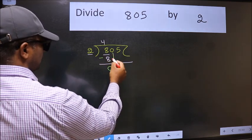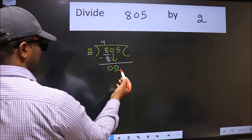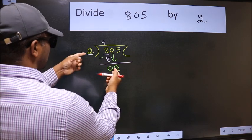After this, bring down the next number. So 0 down. Now here we have 0 and here 2. 0 is smaller than 2.